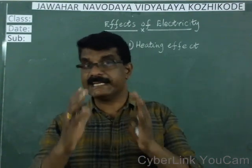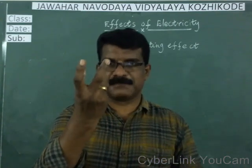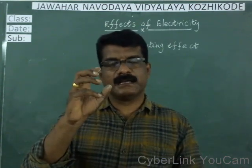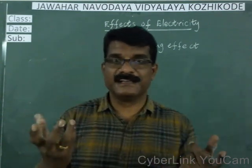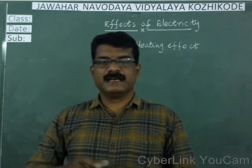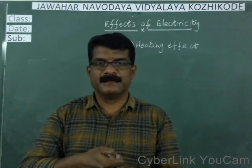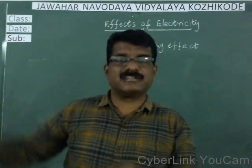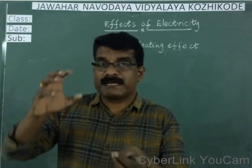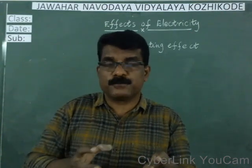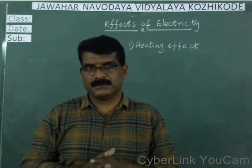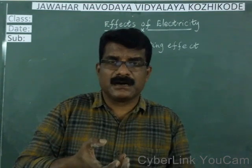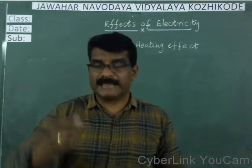Now we shall see the heating effect of electric current. In your home there are electric bulbs. If you go and touch the electric bulb after switching it on for some time, you feel very hot. Similarly, if you switch on the iron box for some time and touch it, it will be very hot. Here the electric energy is converted into heat energy. By using the electric current, we can produce heat. The materials get hot when electricity passes through them. That is the heating effect of electric current.